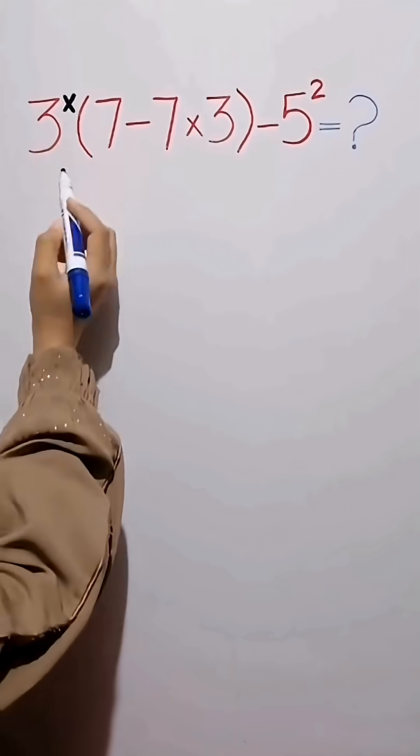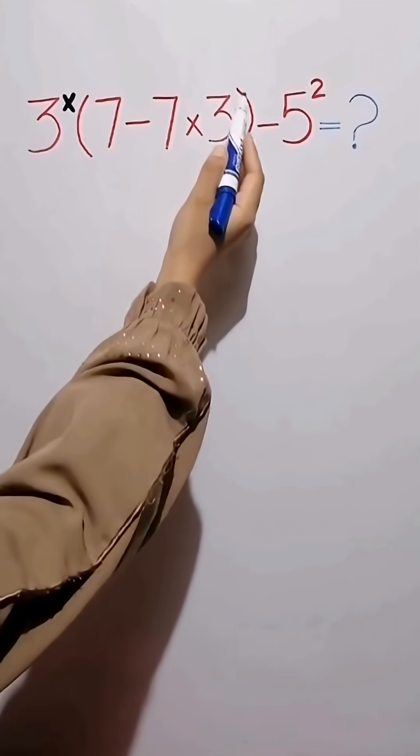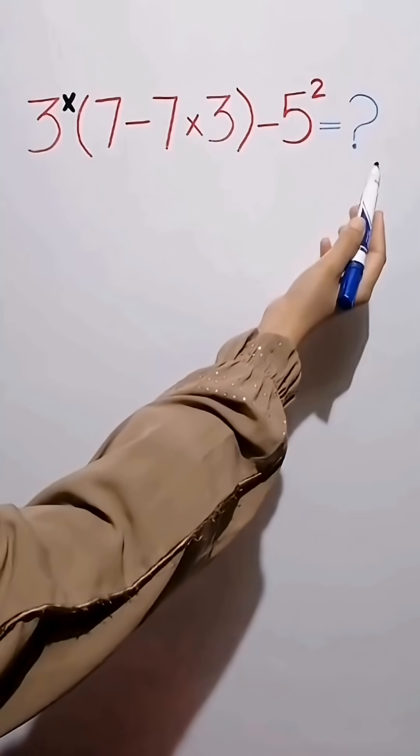3 times open parentheses 7 minus 7 times 3 close parentheses minus 5 to the power of 2. Can you solve this question?